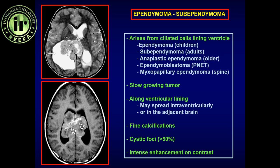When ependymoma extends into the brain parenchyma, it causes a significant vasogenic reaction with T2 hyperintensity and a wide zone of transition. It is frequently associated with hydrocephalus, which may be related to cell debris — similar to what is seen in choroid plexus papilloma or papillary carcinoma — or to obstructive hydrocephalus. Importantly, because it breaches the ependymal lining and is directly exposed within the ventricular system, it can cause drop metastasis anywhere along the neural axis.